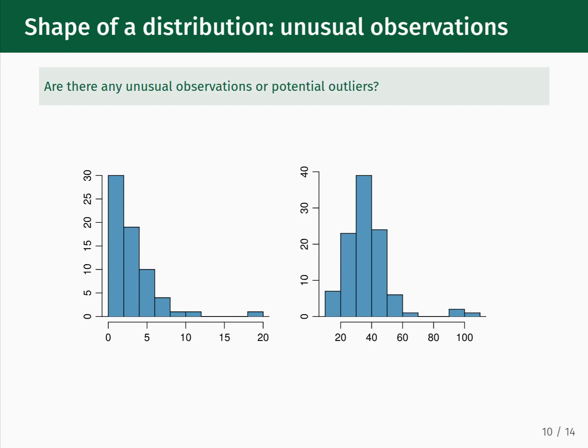It is important to make note of any unusual observations or potential outliers when you are examining a distribution. In these examples, the plot on the left has a connected distribution from 0 to about 12, then a gap, and then data points between 18 and 20. So those data points that are disconnected from the main distribution would be outliers. On the histogram to the right, we have a symmetric distribution centered around 35, and then some outliers between 90 and 110. Note that when you are describing center and skewness, you should not take these outliers into account.